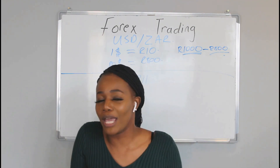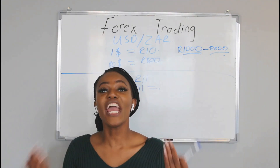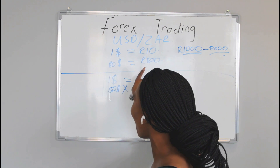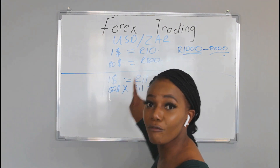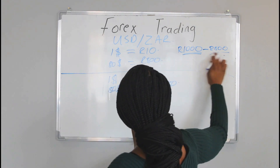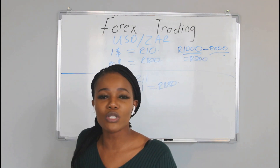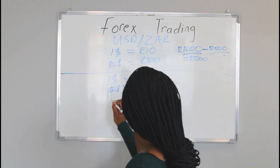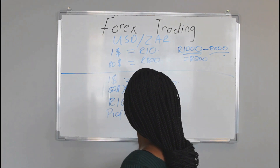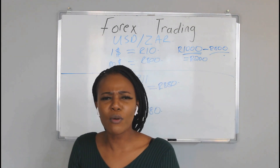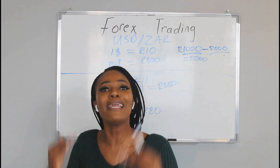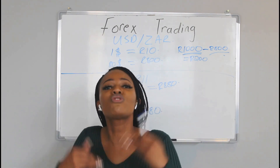So now what you need to do is change your United States dollars back into South African rand. You take the $80, multiply it by the new exchange rate of 11 rand per dollar, and you get 880 rand. If you add the 880 to the 200 rand you had left in your trading account, your total trading balance is 1,080 rand. So your actual profit is only 80 rand. A lot of people will say that's not a lot of money — only 80 rand. So how do you actually increase your potential profit when it comes to forex trading?